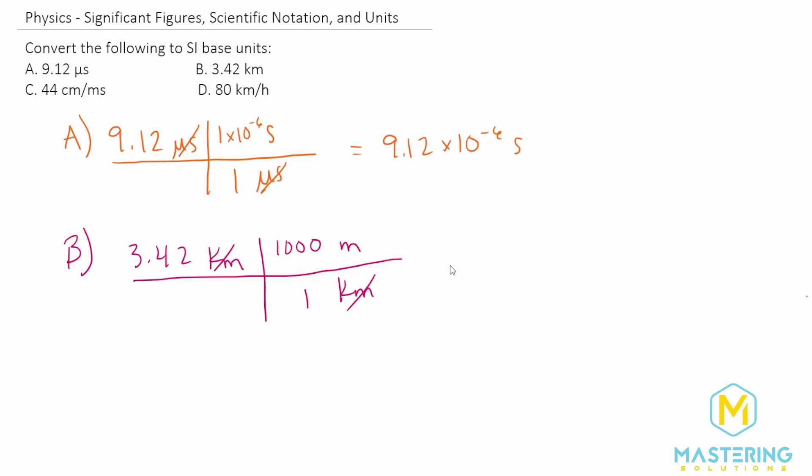So one, two, three. So that gives us 3,420 meters. In the same fashion that we did in part A, we can replace kilo with what it stands for, which is 10 to the third. So putting it in scientific notation, it is also correct to say that this is 3.42 times 10 to the three meters.